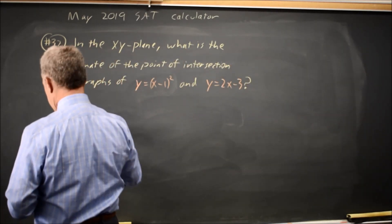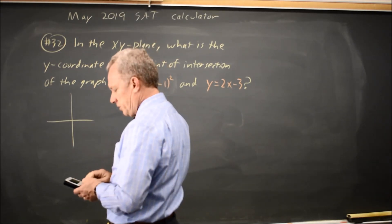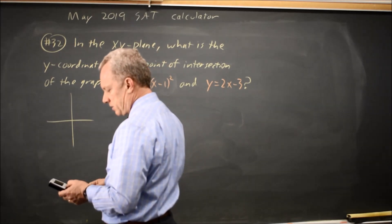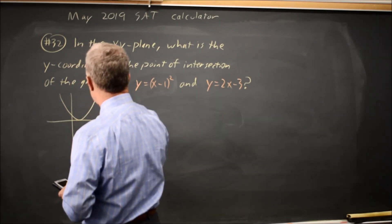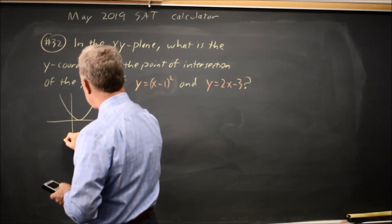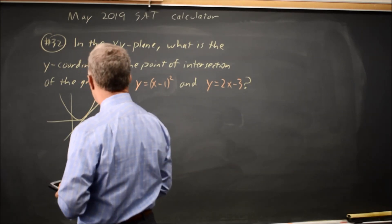If I put y equals x minus 1 squared in y1, and y equals 2x minus 3 in y2, and select zoom 6, I get a parabola that just touches the x-axis at x equals 1, and I get a line with a slope of positive 2 that seems to touch that parabola.